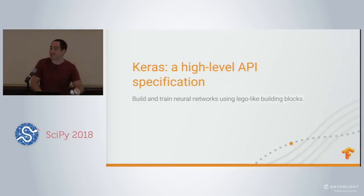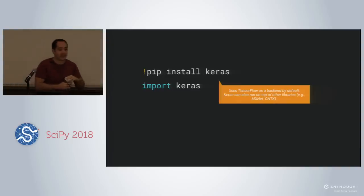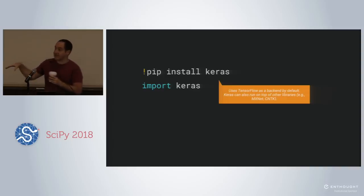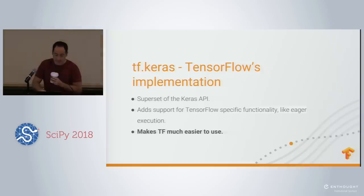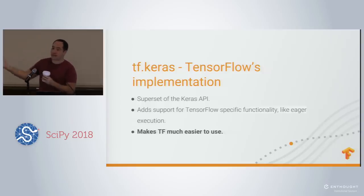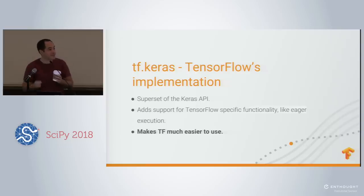Keras is Lego-like building blocks for defining your neural networks. If you wanted to use Keras outside of TensorFlow, you'd just do pip install Keras. But we're going to use something called tf.keras — TensorFlow's implementation of the Keras API. It's a superset: everything you're used to from Keras, plus integration with eager execution, estimators, distributed training, and all that. In my opinion, this is the easiest way to write TensorFlow code while you're getting started.